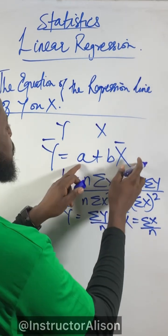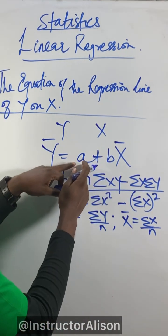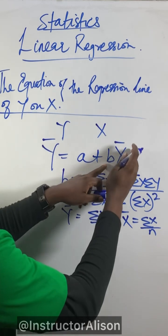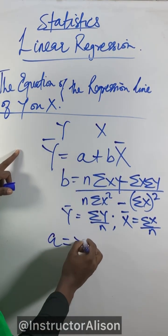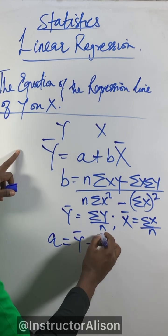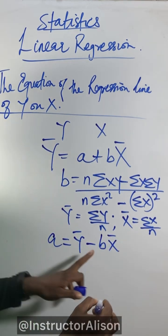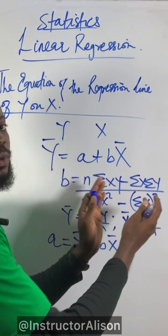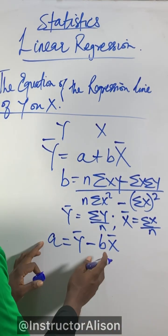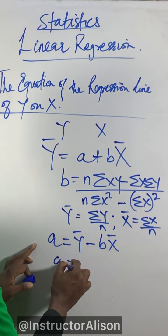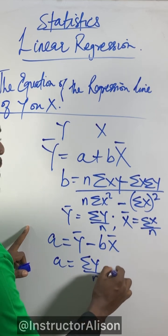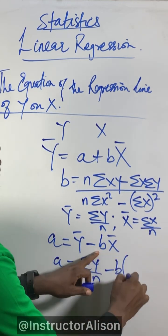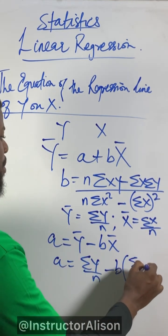Once you get all these things, you're done. Just substitute into your formula. Since you already have b, a will be equal to y-bar minus b times x-bar. Remember you already got b from the calculation we did first. Since you know b now, the mean of y is sigma y over n minus b times the mean of x, which is sigma x over n.